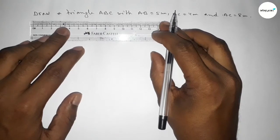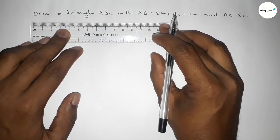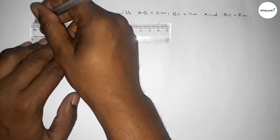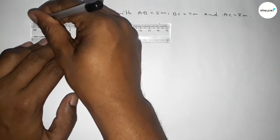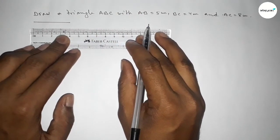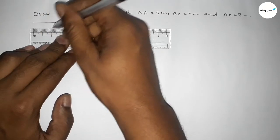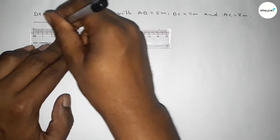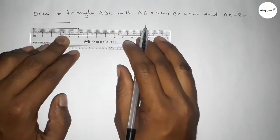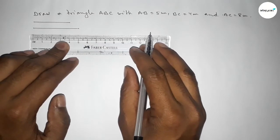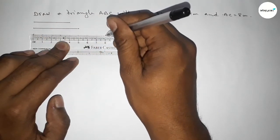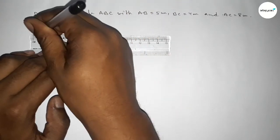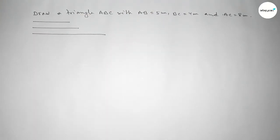First of all, we draw a line of length 4 centimeters — starting zero, one, two, three, four. Then drawing another line of length 5 centimeters, and drawing another line of length 8 centimeters. So this is the 4 cm line, the 5 cm line, and the 8 cm line.